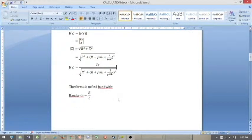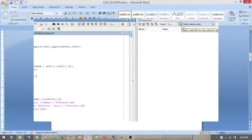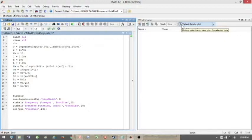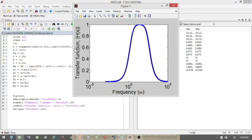The formula to find bandwidth is R over L. We're going to use C equals to 0.05 Farad, R equals to 10 Ohm and L equals to 0.03 Henry. We're going to run this and find the resonant frequency, the bandwidth and the quality factor.